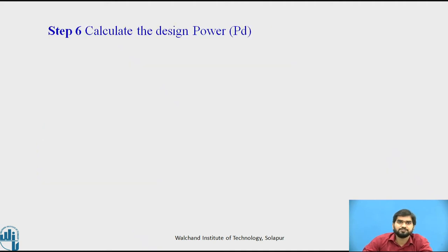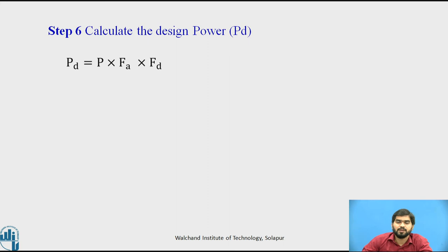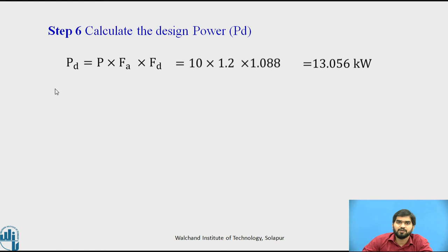Step 6: Calculate the design power. The design power is given by Pd = actual power × FA × Fd. Substituting the values, the design power Pd = 13.056 kilowatt.